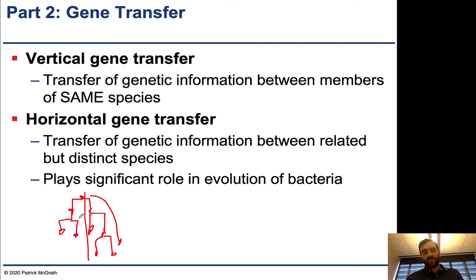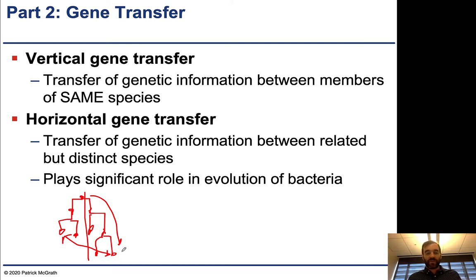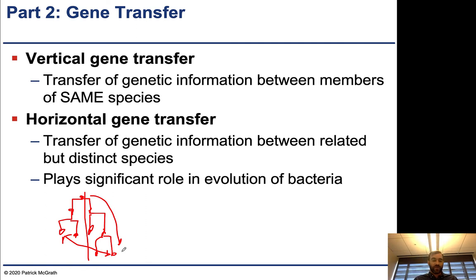Horizontal gene transfer occurs when DNA is exchanged between members of different species. They can be closely related or significantly distant apart. How separated they are in evolutionary time depends upon the exact mode of transfer, and these play a significant role in the evolution of bacteria.